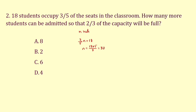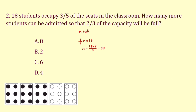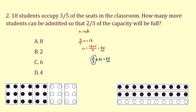The classroom has 30 seats divided into 5 sections, out of which 18 students occupy 3 sections. If we divide 30 seats into 3 sections, 2/3 into 30 equals 20 — meaning 20 students are required to fill 2/3 of the seats. Since 18 students are already present, 20 minus 18 equals 2. We need to admit 2 more students to fill 2/3 capacity. The answer is option B.